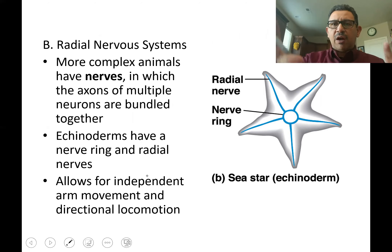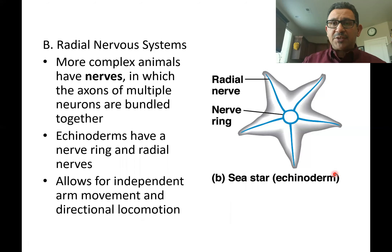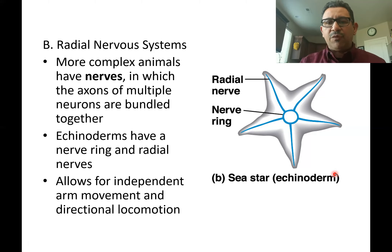Those arms on a sea star, for example, can move in the direction where prey can be found. These echinoderms like to feed on mussels and oysters, and once food is detected, the animal can deliberately move in that direction.